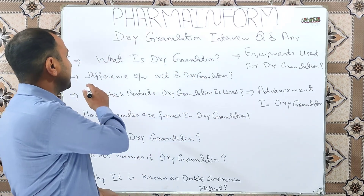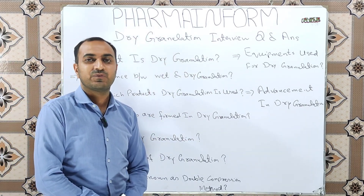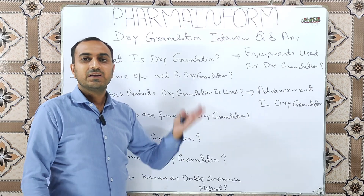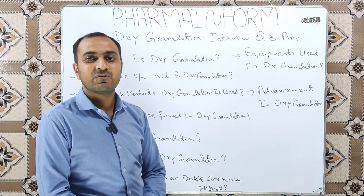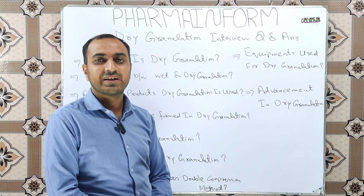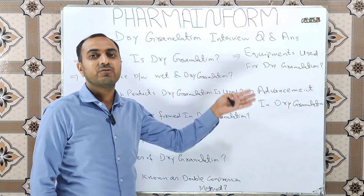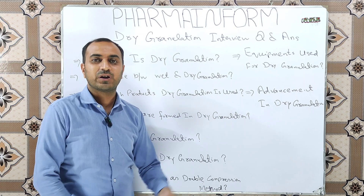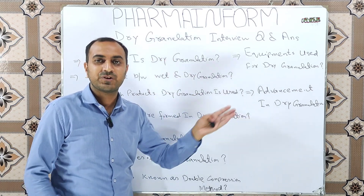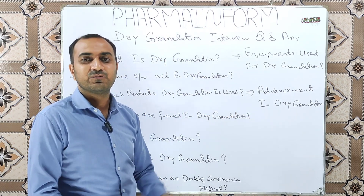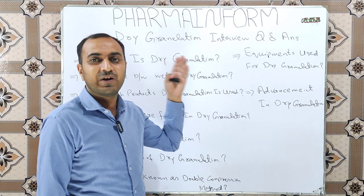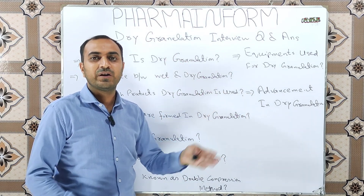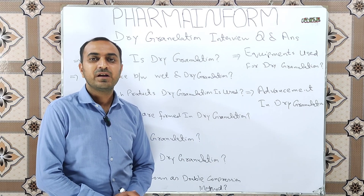The next question is: what is the difference between wet granulation and dry granulation? The basic difference is that in dry granulation we convert fine powders into granules by the application of pressure, whereas in wet granulation we convert fine powders into granules by adding a solvent or binder solution.